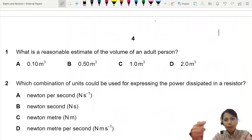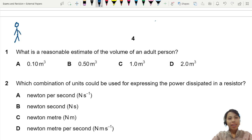What is a reasonable estimate of the volume of an adult person? So you're assuming this human. You can choose a shape and estimate.